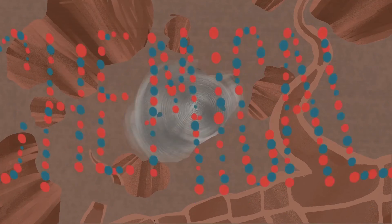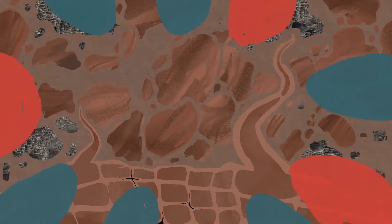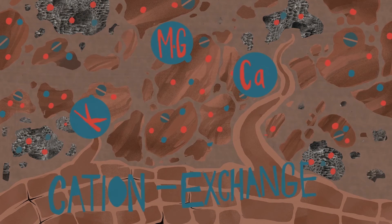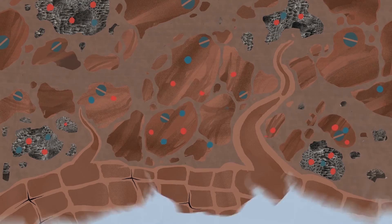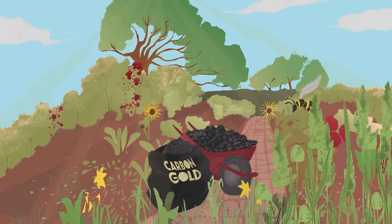Chemical: Biochar is very high in carbon which is good for a process called cation exchange, which essentially means more nutrients are retained in the soil and available for plant roots.